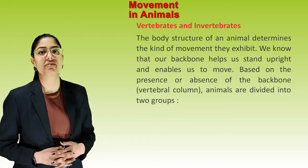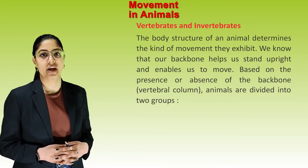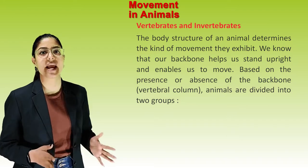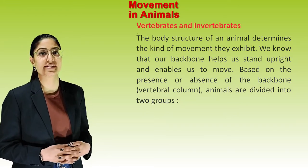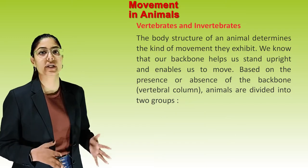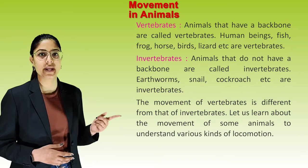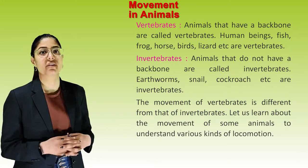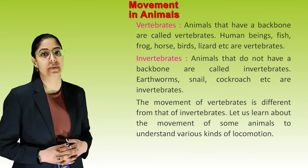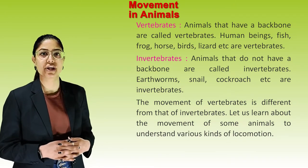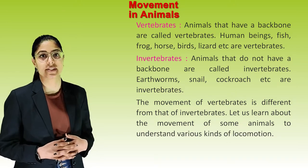Vertebrates and invertebrates. The body structure of an animal determines the kind of movement they exhibit. We know that our backbone helps us stand upright and enables us to move. Based on the presence or absence of the backbone or vertebral column, animals are divided into two groups: vertebrates and invertebrates. Animals that have a backbone are called vertebrates. Human beings, fish, frog, horse, birds, lizards, etc. are vertebrates.